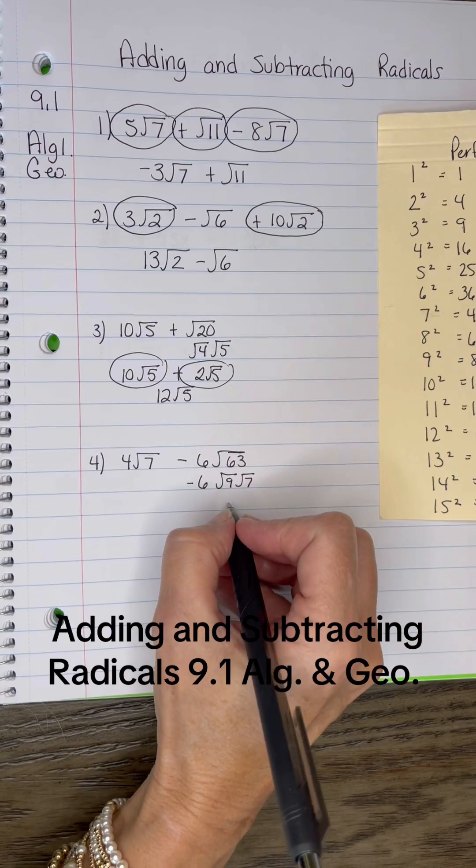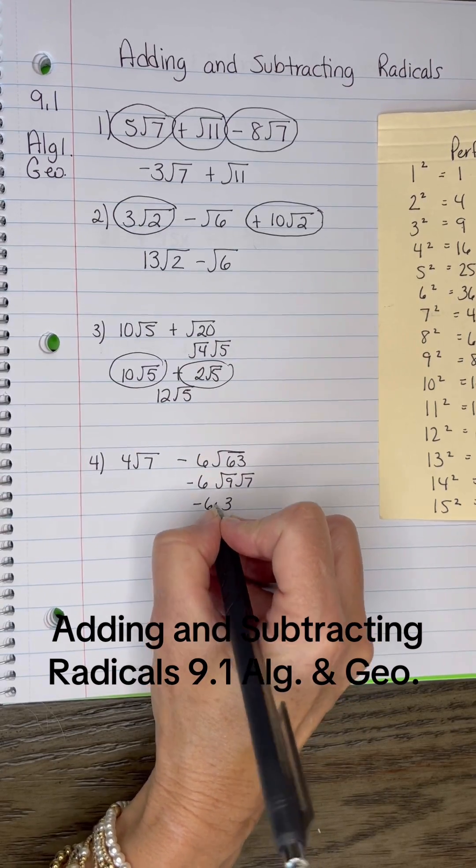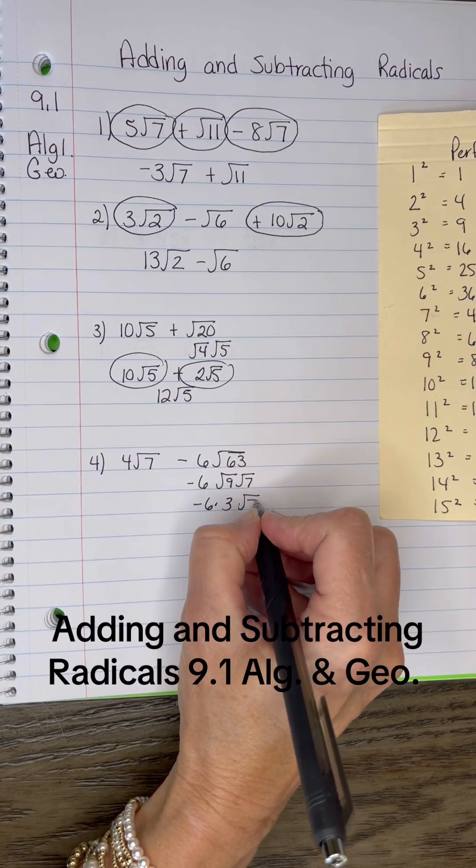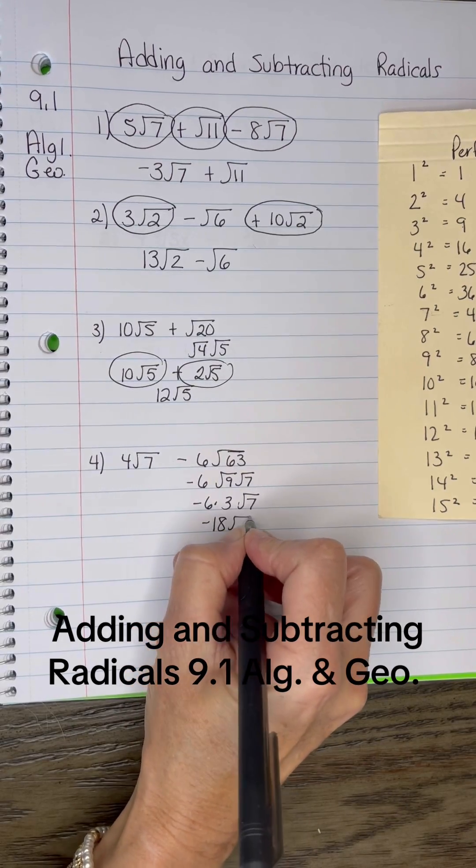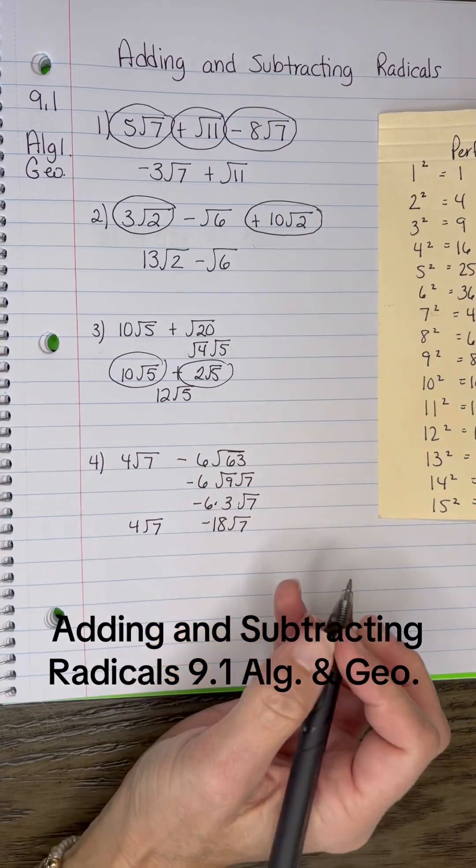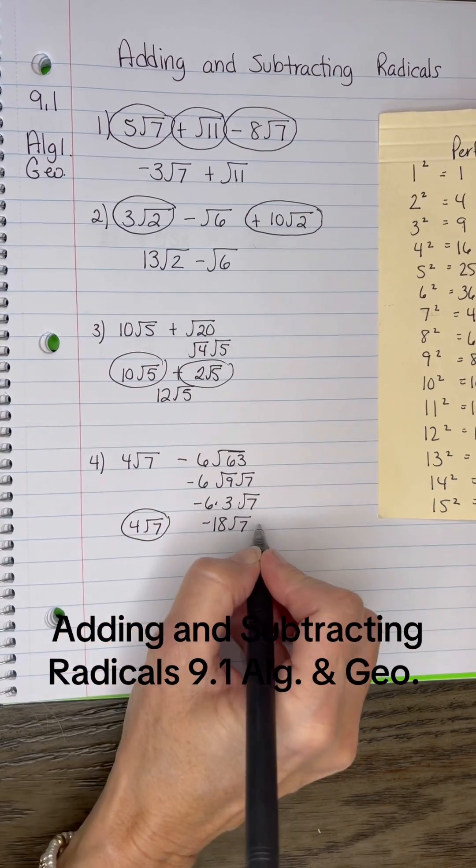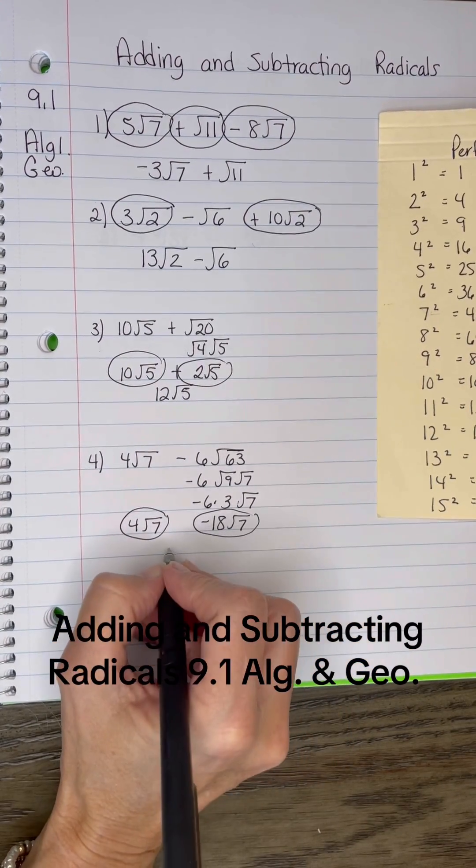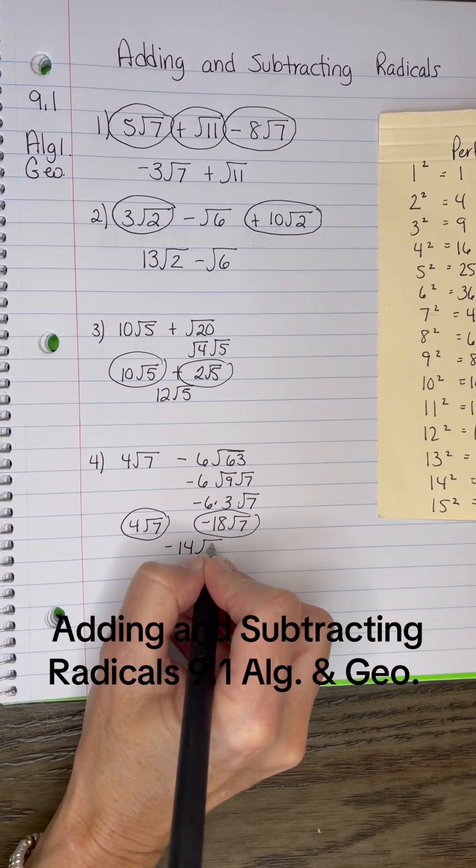The square root of 9 is 3. So I have negative 6 multiplied by 3 times √7, which is negative 18√7. So 4√7 minus 18√7. Now I can combine them. 4 minus 18 is negative 14√7.